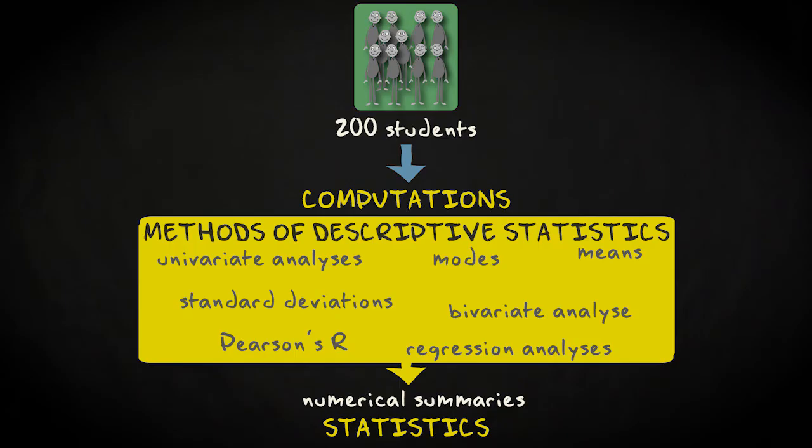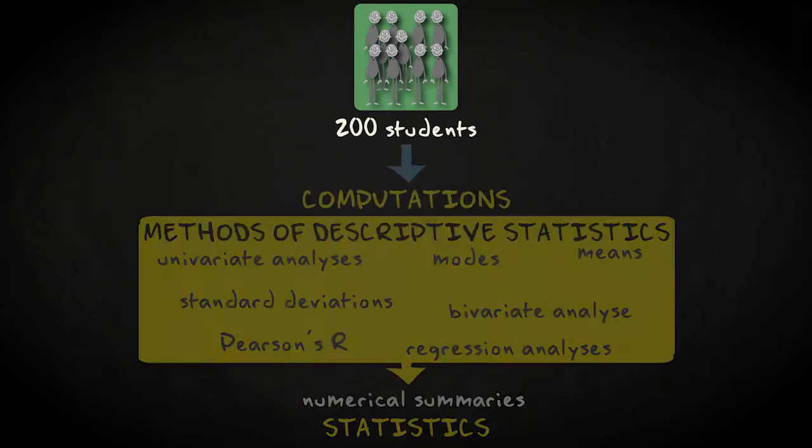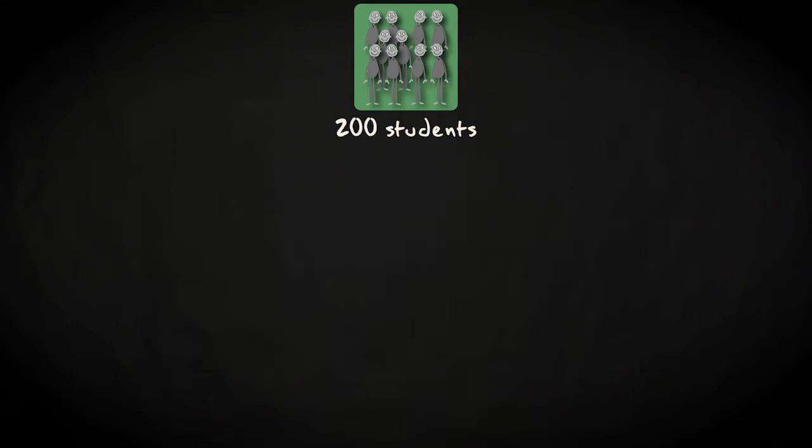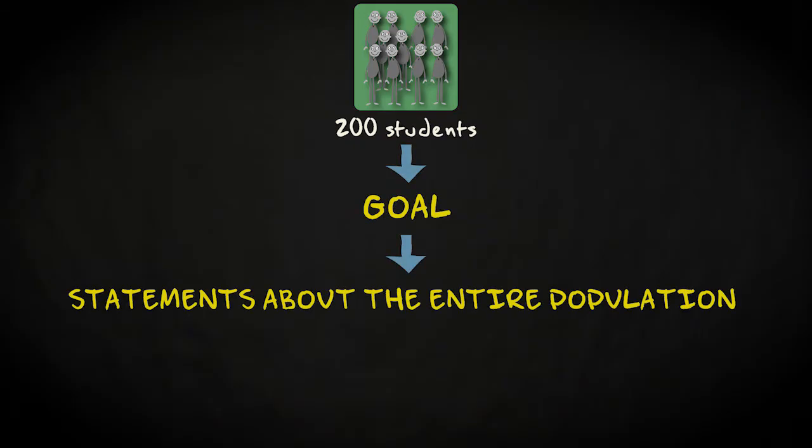However, in the actual research practice, we are often not so much interested in summaries of a specific sample, in our case the 200 selected students, but our real goal is to make statements about the entire underlying population, so in our case all 300,000 students in London.